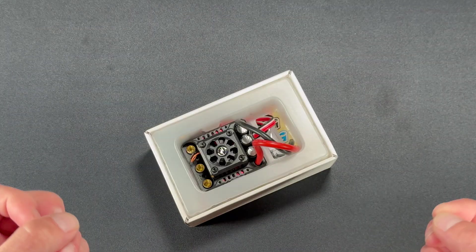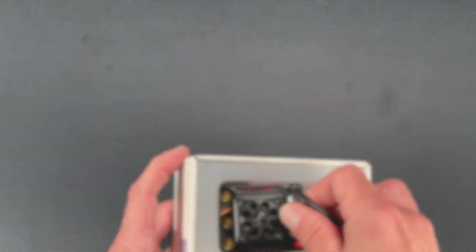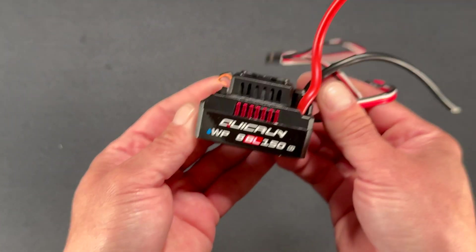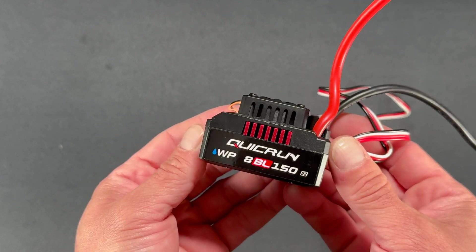Let's open it up and take a look. So there you have it. All electronics get songs from the angels when you open them. Let's take a look at the speed control itself. There it is, the QuickRun WP-8BL-150 G2.